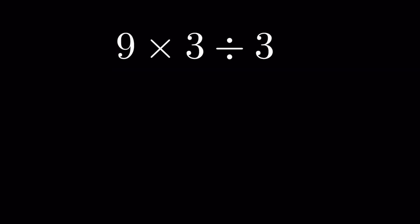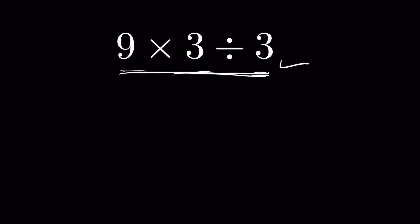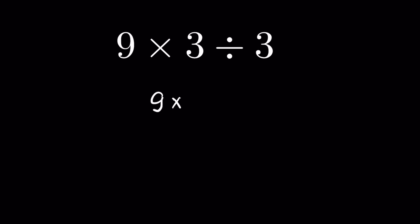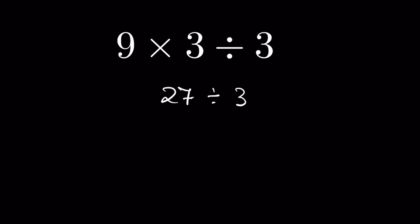What about 9 times 3 divided by 3? These types of questions can confuse you into thinking left-to-right doesn't matter, because here whether you do division first or multiplication first the answer doesn't change. If you do division first: 3 divided by 3 is 1, then 9 times 1 is 9. If you do multiplication first: 9 times 3 is 27, then 27 divided by 3 is 9. Same answer either way.